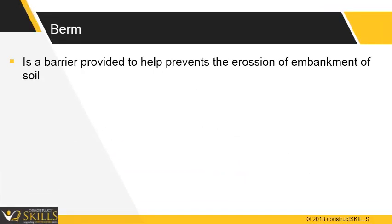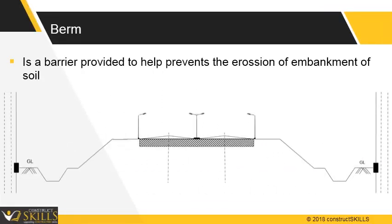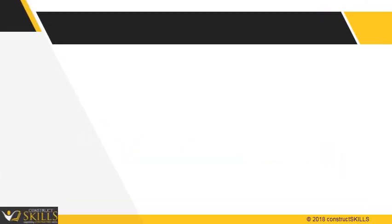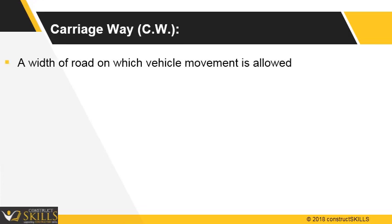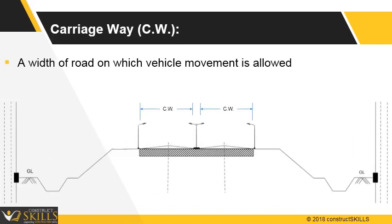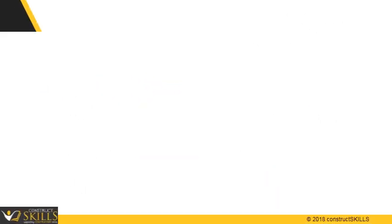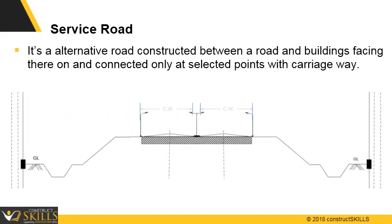Burm: a barrier provided to help prevent the erosion of embankment of soil into the storm drain. Carriageway: the width of road on which a vehicle travels. A roadway can comprise one or more carriageways. Service road: an alternative road constructed between a road and buildings, connected only at selected points with the carriageway.